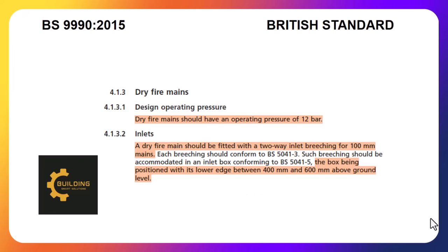In the case of dry mains, the design operating pressure should be 12 bar. Regarding the breaching inlet, a dry fire main must be fitted with a 100mm two-way breaching inlet. If the breaching inlet is placed inside a box, the box should be positioned so that the distance between the lower side of the box and ground level is between 400mm and 600mm.